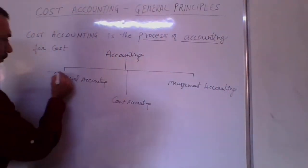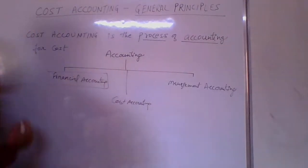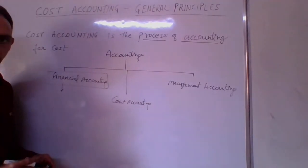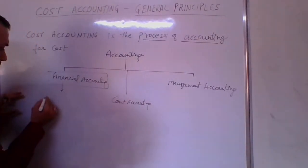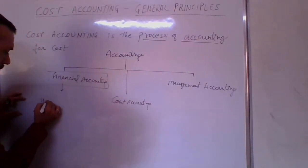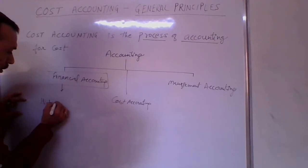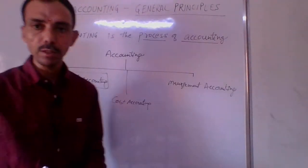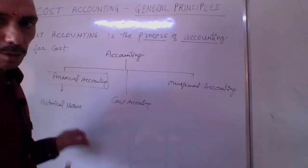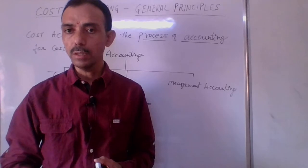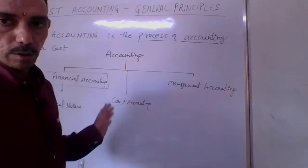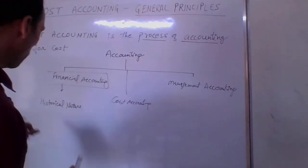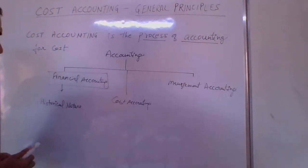Under financial accounting, transactions are recorded after the expenses are complete. This is of a historical nature. Why historical? Because under financial accounting, first the transactions occur and thereafter they are recorded in the books of accounts — first the expenses happen, then they are recorded.